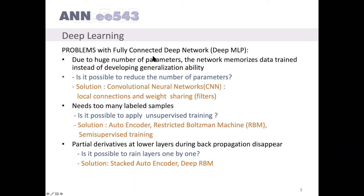The problems with a fully connected deep multi-layer perceptron are as follows. Due to a huge number of parameters, the network memorizes training data instead of developing generalization ability. The question is: is it possible to reduce the number of parameters? The solution is convolutional neural networks, CNN, which is a deep neural network in which local connections and weight sharing is used. These kinds of connections are called filters in the convolutional neural network.